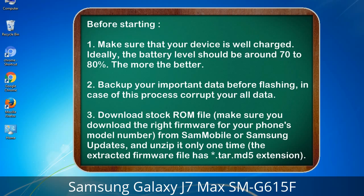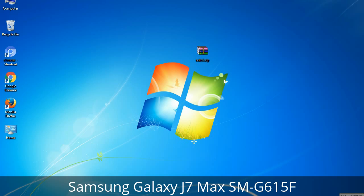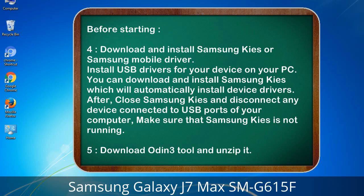3. Download the stock ROM file. Make sure you download the right firmware for your phone's model number from Sammobile or Samsung Updates, and unzip it only one time. The extracted firmware file has a .tar.md5 extension. 4. Download and install Samsung KIES or Samsung mobile driver to install USB drivers on your PC. Close Samsung KIES and disconnect any device from USB ports, making sure KIES is not running. 5. Download Odin 3 tool and unzip it.